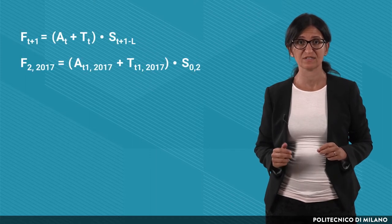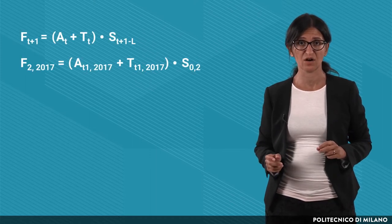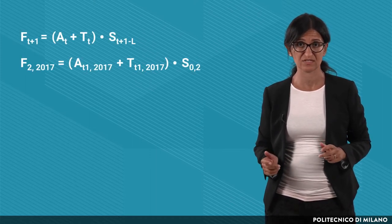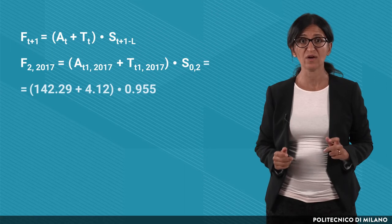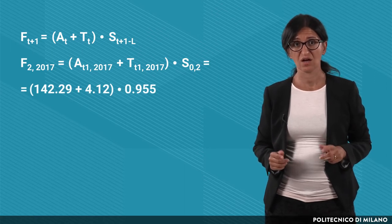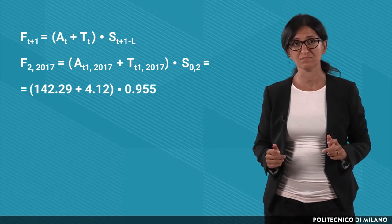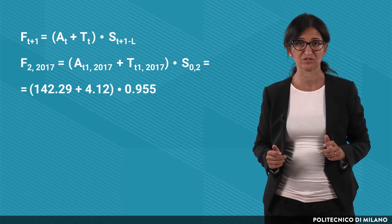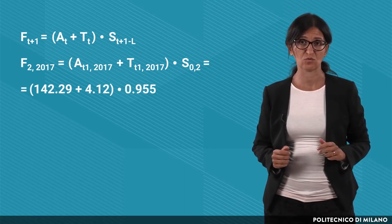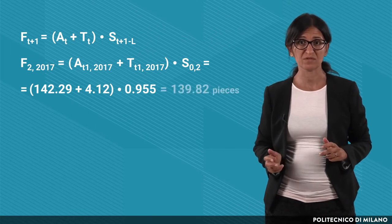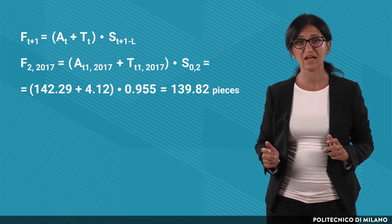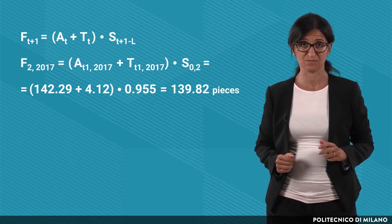On the basis of these new values, we can obtain the forecast for the second quarter of 2017, which is equal to the new average plus the new trend, all multiplied by the seasonal factor of the second quarter. Therefore, we obtain 139.82 pcs.